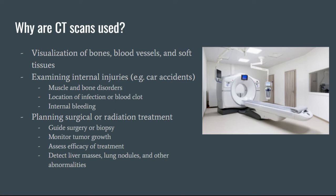CT scans can also be used to see if you have a muscle or bone disorder, or if there's a blood clot, infection, or internal bleeding. They can also be used as a preemptive measure to plan for surgery so that doctors can see where the thing is that they're going to remove, or for radiation treatment to see how a tumor is growing and whether treatment is causing it to shrink. They're also used to detect liver masses, nodules in the lungs, and other problems — showing really far-reaching uses in medicine.